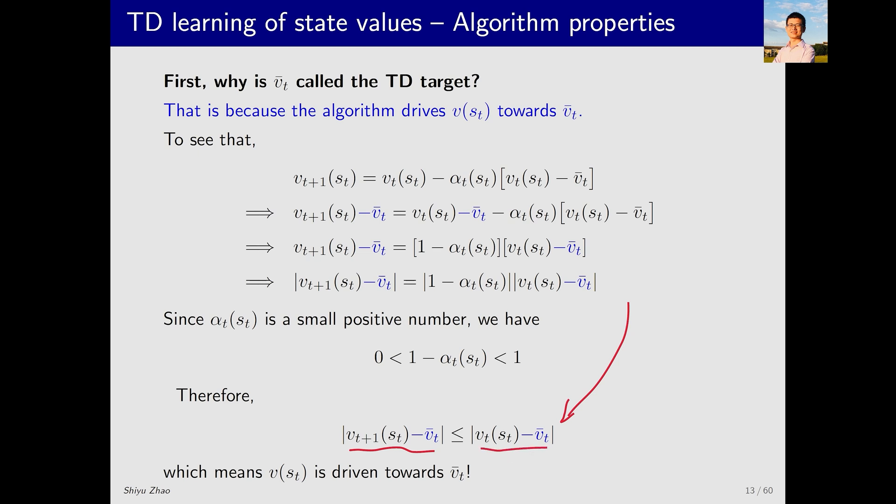What does this imply? It implies that at the next time step, the distance between V(s_t) and V_t bar is smaller. So, this algorithm drives V(s_t) towards V_t bar. This is the overall idea. If you understand this, you will have a clear understanding of what the TD algorithm is doing.